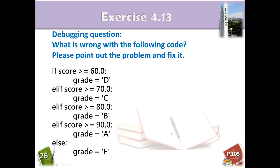So we also need some debugging. What is wrong with the following code? Please point out the problem and fix it. If the score is larger than or equals 60, the grade will become D. And else if score is larger than 70, the grade will equal C. What is the problem? Can you find it?